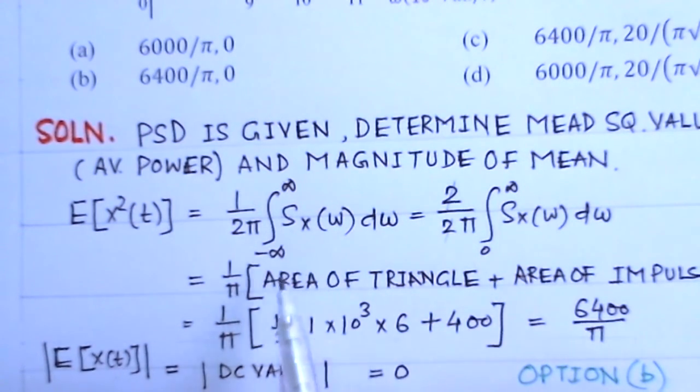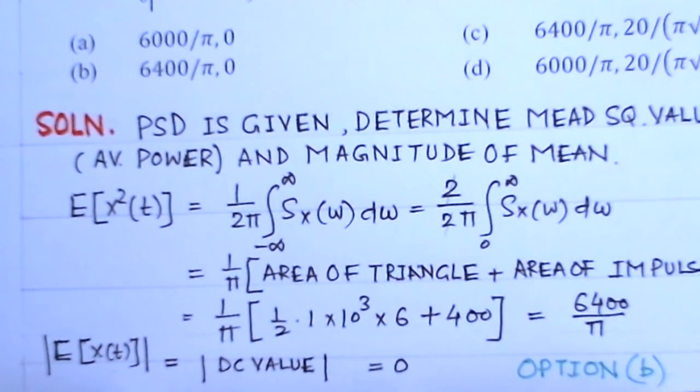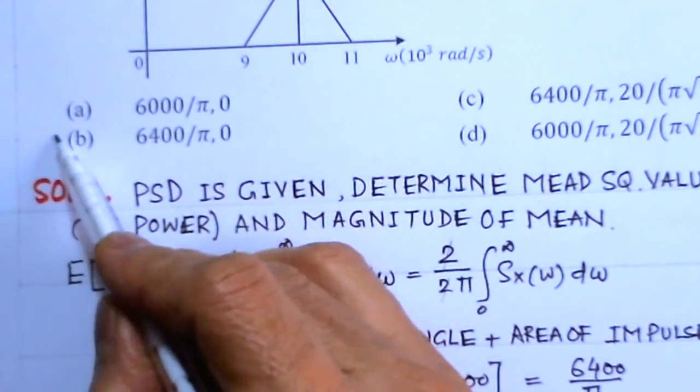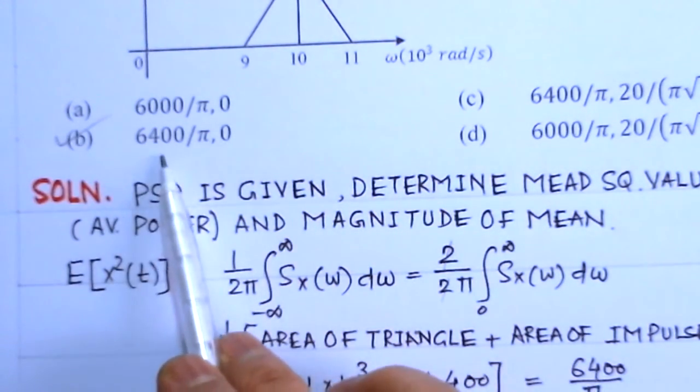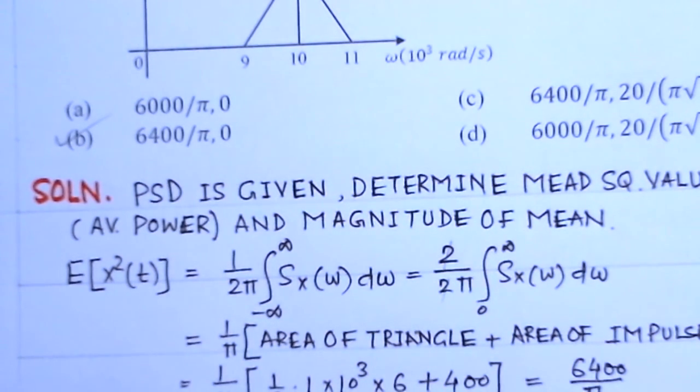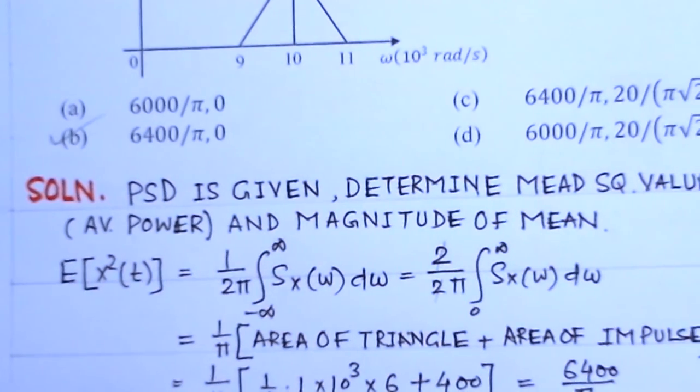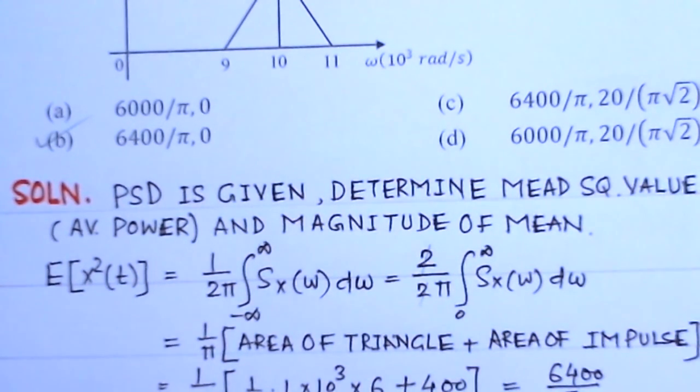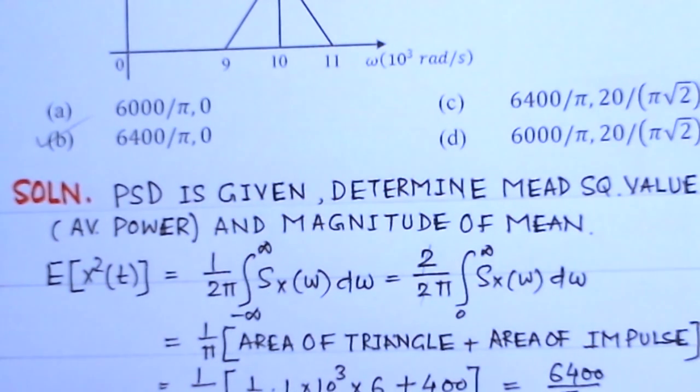There is no DC value of this signal, so the DC value is 0. If it is 0, the magnitude will also be 0. So option B is the right choice: 6400/π and 0. This is a simple problem involving the concepts of power spectral density.